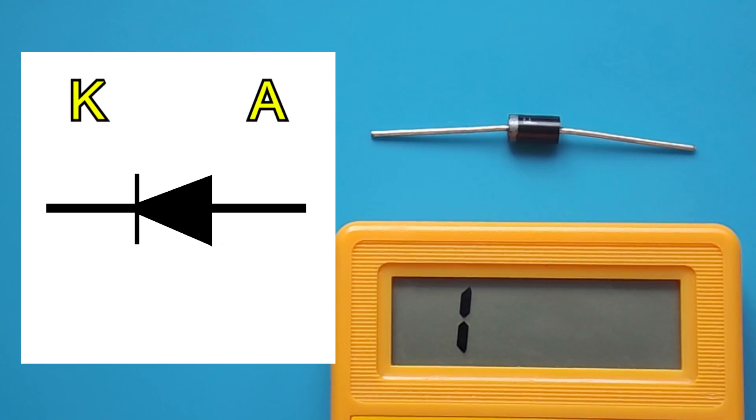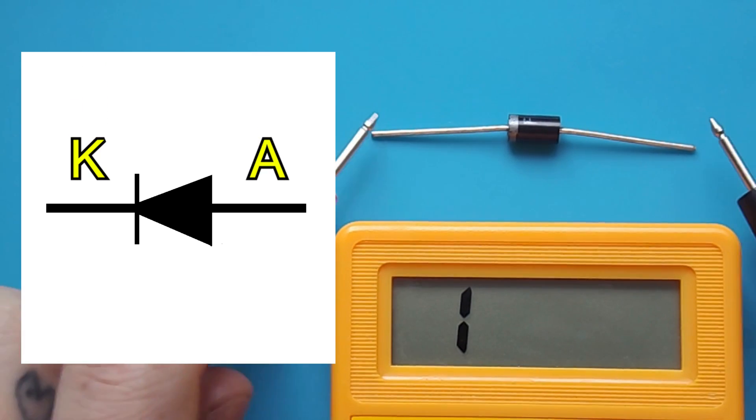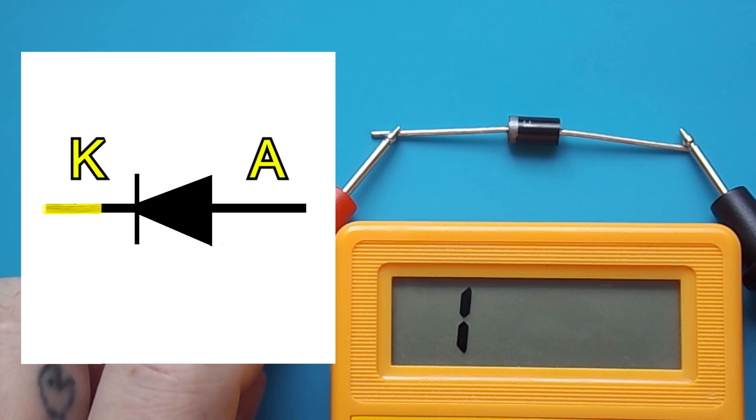Each diode has two terminals, an anode and a cathode. If a positive is applied to the cathode and a negative to the anode, then the diode will be closed, and no current will flow through it. At this time, the multimeter shows nothing, since the diode is closed and has a very high resistance.